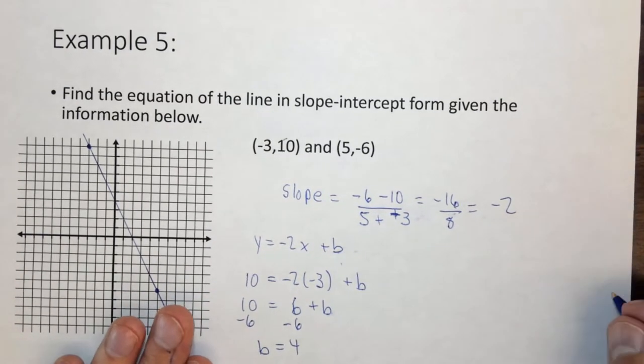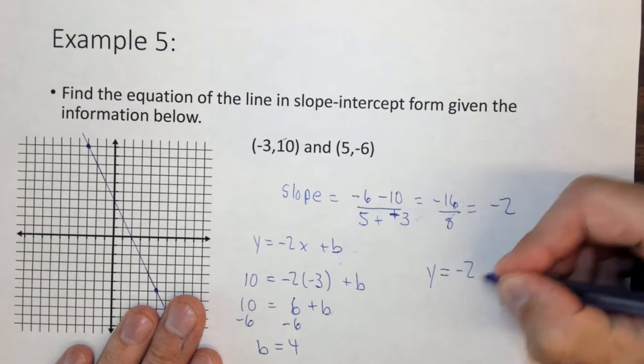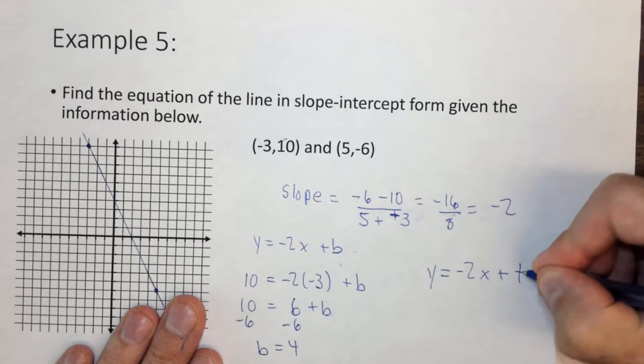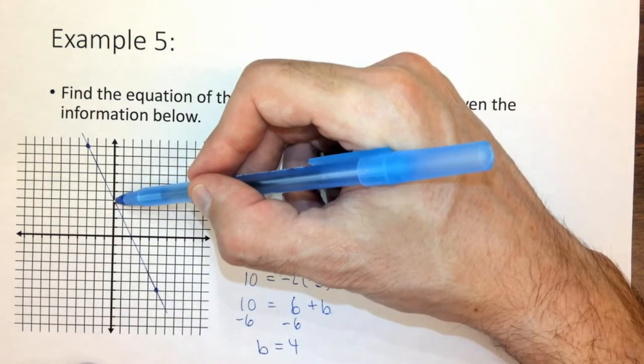b equals 4. So the slope of the line is 4. So the overall equation of this line is y equals minus 2x plus 4. If you look here, the line goes right through the point at 4.